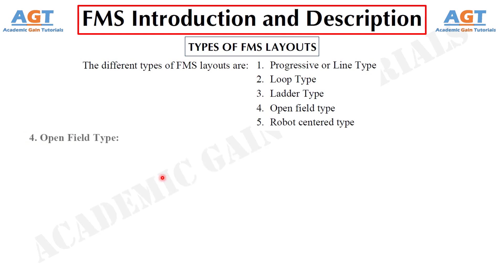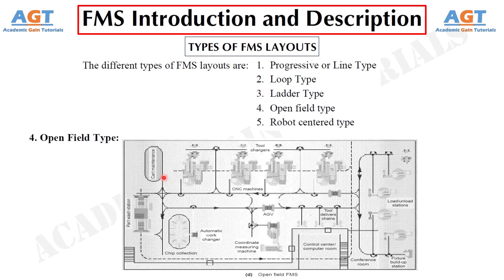In the open field type FMS layout, the configuration is as shown in figure D. The loading and unloading station is typically located at the same end. Parts will go through all the substations, such as CNC machines, coordinate measuring machines, and wash stations, with the help of AGVs moving from one substation to another.